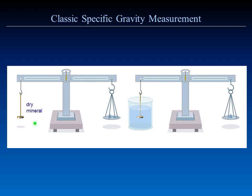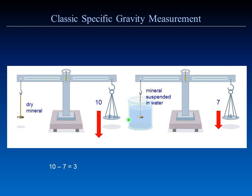We start with a dry mineral and we weigh it — we get a value of 10. Units don't matter; this could be ounces, kilos, grams, or carats, and the number may come out 32 or 3.1. Then we weigh the mineral suspended in a beaker of water and we get a lighter weight value — everybody knows things weigh less in water. In this case we get a value of 7. The specific gravity is calculated by taking the dry weight and subtracting the wet weight, giving a value of 3. That 3 happens to equal the weight of the water displaced by the mineral.